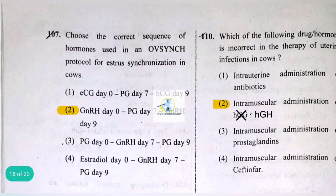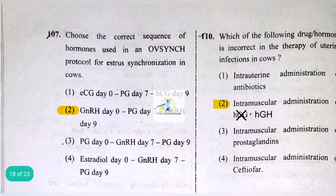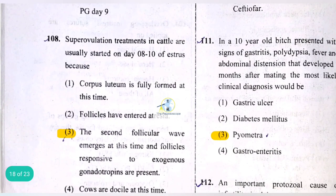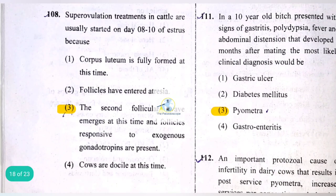The correct sequence of hormones in the Ovsynch protocol for estrus synchronization in cows is: GnRH on day zero, PGF2α on day seven, and GnRH on day nine. Superovulation treatments in cattle are usually started on day 8 to 10 of estrus because the second follicular wave emerges at this time and follicles responsive to exogenous gonadotropins are present.